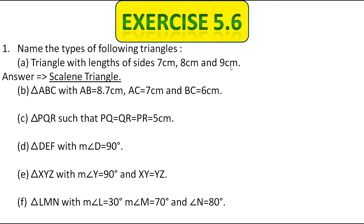Why it is called a scalene triangle — you must have this question in your mind. To find the answer to that question, you should go to my previous video. Now let's write the answer for the second part: triangle ABC with AB = 8.7 cm, AC = 7 cm, and BC = 6 cm. Here also all the sides are of different lengths, therefore it is called a scalene triangle.